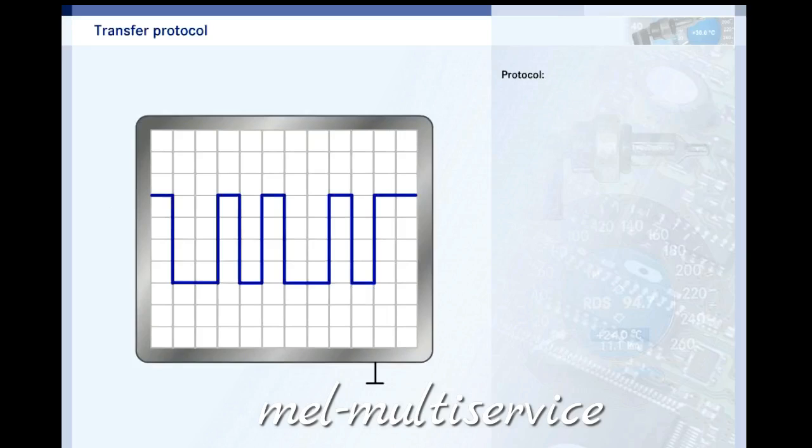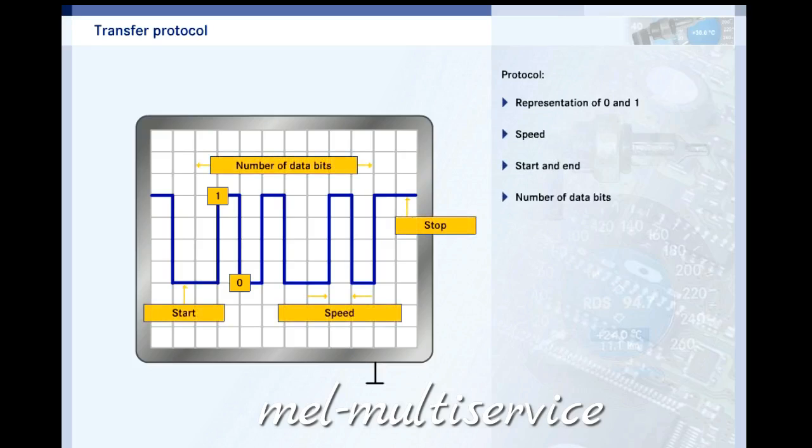There has to be a number of conventions between the transmitter and the receiver for serial data transfer to take place without errors. This is called the protocol. As well as the agreed voltage levels for 0 and 1, it includes the following main items: the data transfer speed, the codes for the start and end, the agreed number of data bits, and the convention for checking whether transfer is correct.